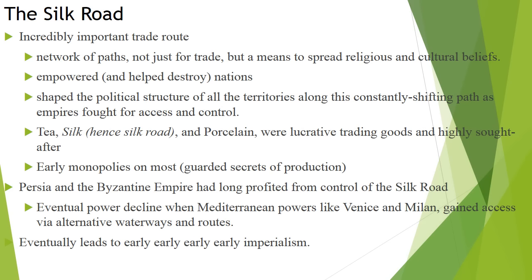Persia controls a lot of the eastern Mediterranean trade to the western world, giving them great power. Eventually that power will wane as the Mediterranean sea lanes become more profitable and controllable by places like Venice and Milan — the Italian city-states — who will start bypassing these land routes in favor of water and sea routes. We'll talk about what enabled them to do that in upcoming slides.